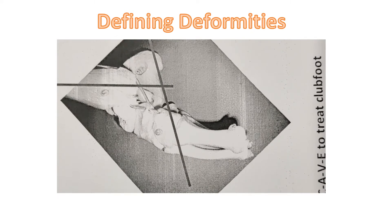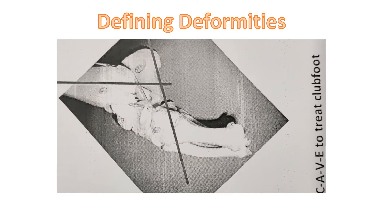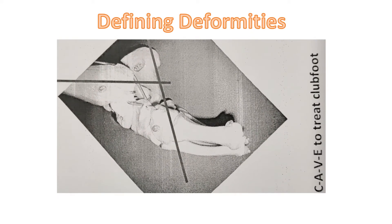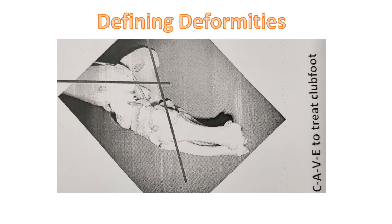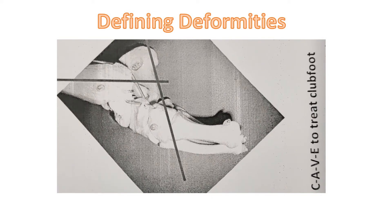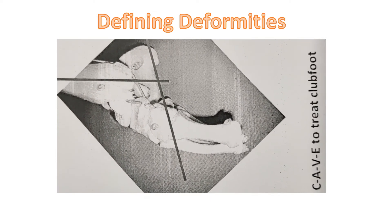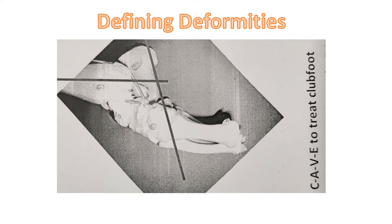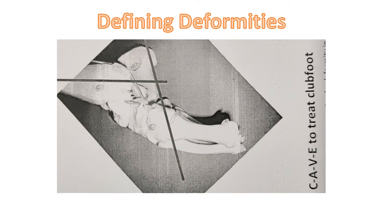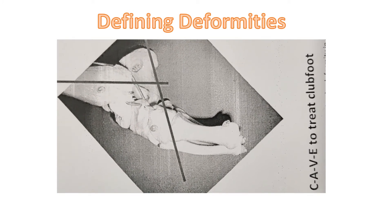Equinus means an increase in the plantar flexion of the foot. In this picture, the calcaneum is plantar flexed in relation to the tibia. This is the final part of the CAVE deformity and will be the last part to be corrected.